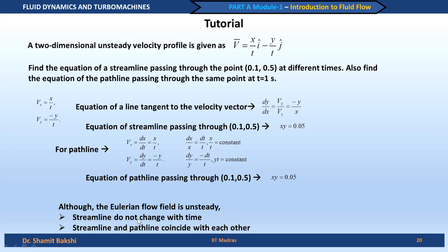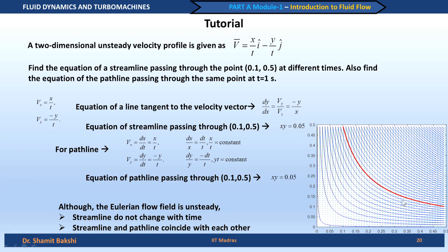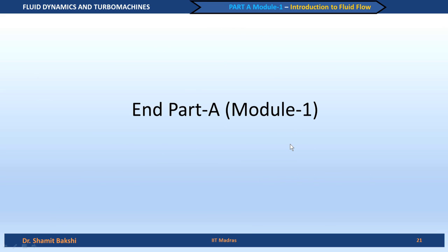To summarize this problem: even though the Eulerian flow field is unsteady, the streamlines do not change with time, and the streamline and pathline coincide with each other. The diagram shows all streamlines for this flow field, with the red line marking the specific streamline xy = 0.05. With this, we conclude Part A of the first module. In the next part, Part B, we will begin the integral analysis of fluid flow. Thank you.